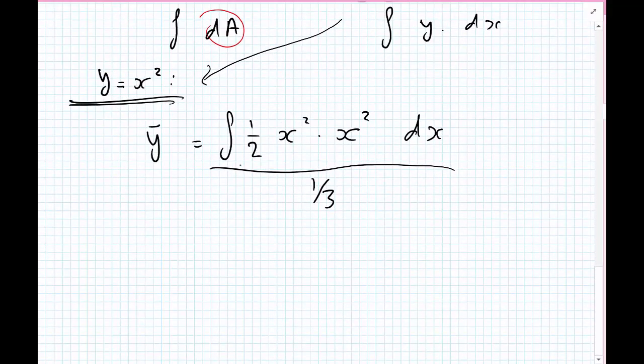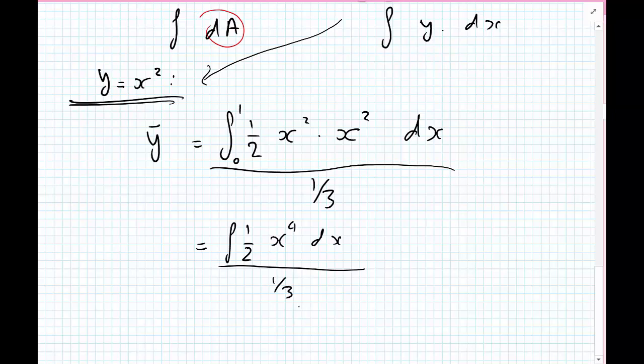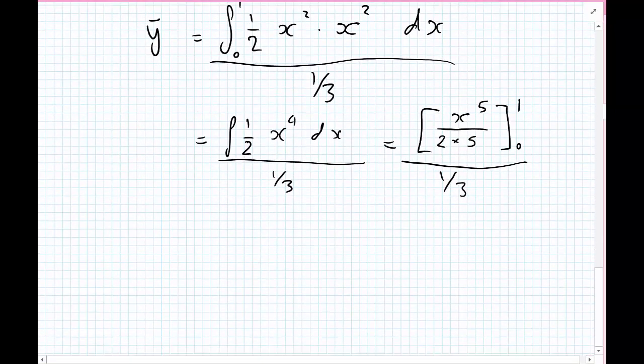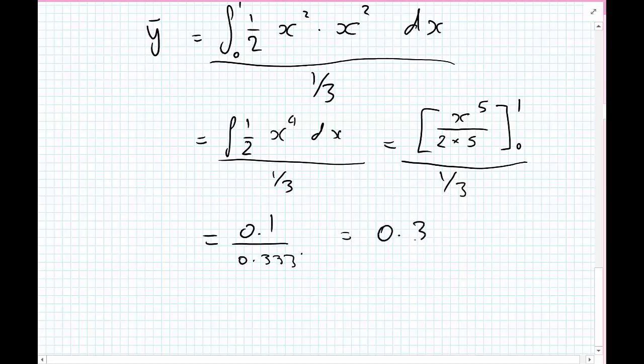Let's perform this integral between 0 and 1. So we have the integral of a half of x to the 4 dx, divided by the integral dA, which we know is a third. Carrying out the integral, we have x to the 5, divided by, we've still got the 1 over 2, times by the 5, which we evaluate between 0 and 1, and then divided by our third again. This will be equal to 1 divided by 10, so 1 tenth, 0.1 divided by 0.333, which equals 0.3 meters.